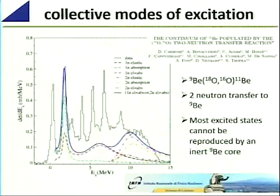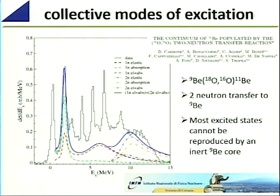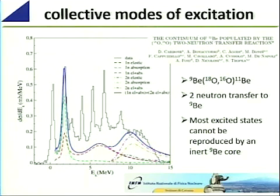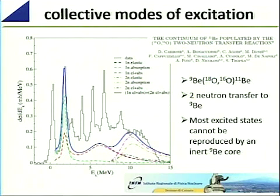This was also shown in an experiment done at INFN Catania, where they used a beryllium-9 target with an oxygen-18 nucleus to put two neutrons into beryllium-9 and form beryllium-11. The experimental excitation energy shows resonances at different energies. Using calculations that assume an inert beryllium-9 core with one- and two-neutron elastic and absorption channels, they can only reproduce one resonance — the remaining resonances are not reproducible, indicating that beryllium-11 states cannot be explained from a beryllium-9 inert core.